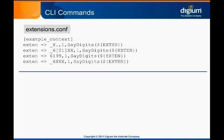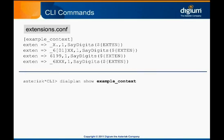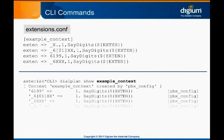To see what the sort order for this context is, we can run dialplan show example_context on the Asterisk CLI. The results show the literal extension appears first in the sort order, followed by the pattern matches in order of specificity. Likewise, if you'd like to test what the sort order for a specific extension will be, you can run dialplan show on the Asterisk CLI for that extension. This will return all of the extensions that match the specified extension, showing the order in which Asterisk will match against them.